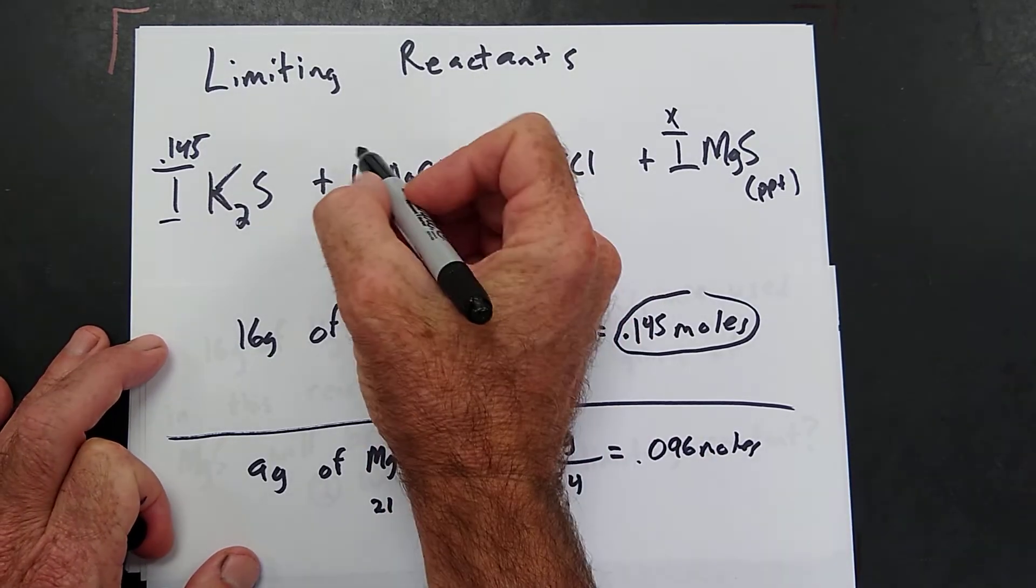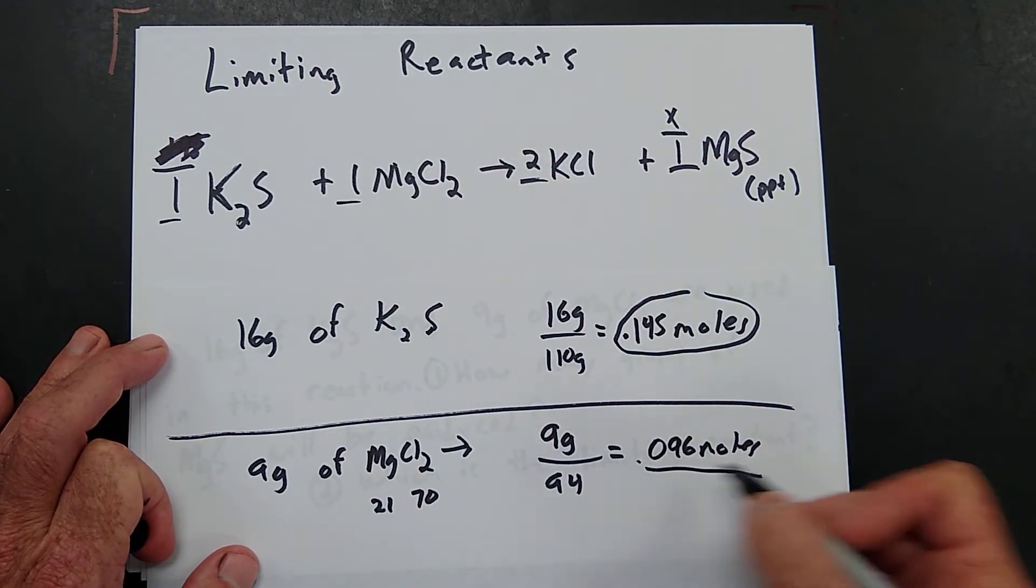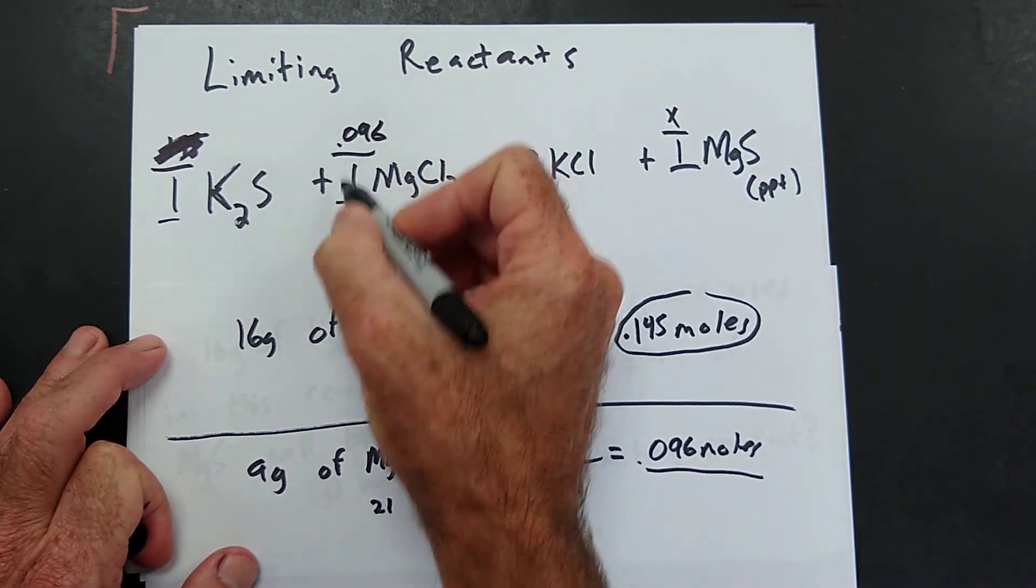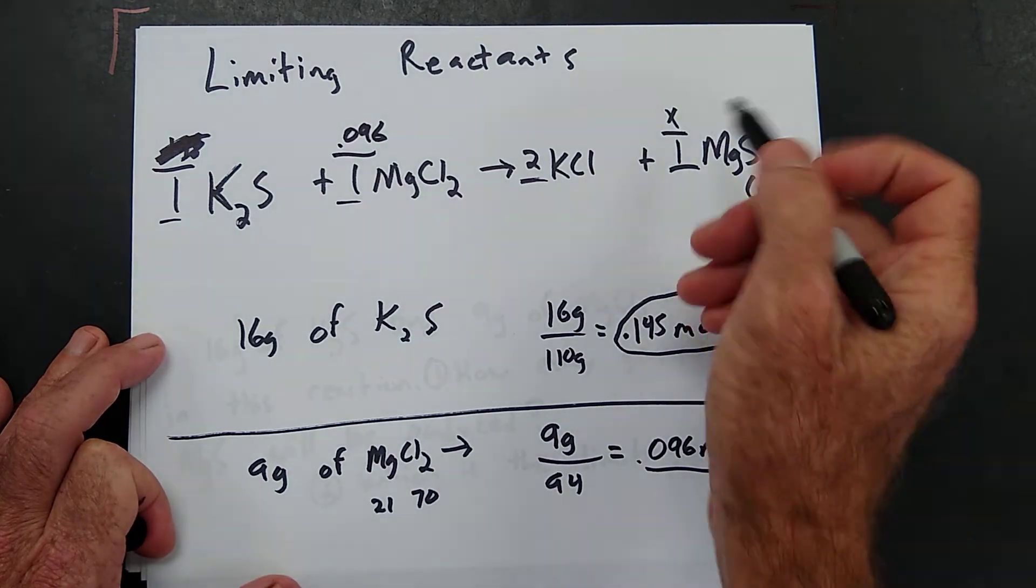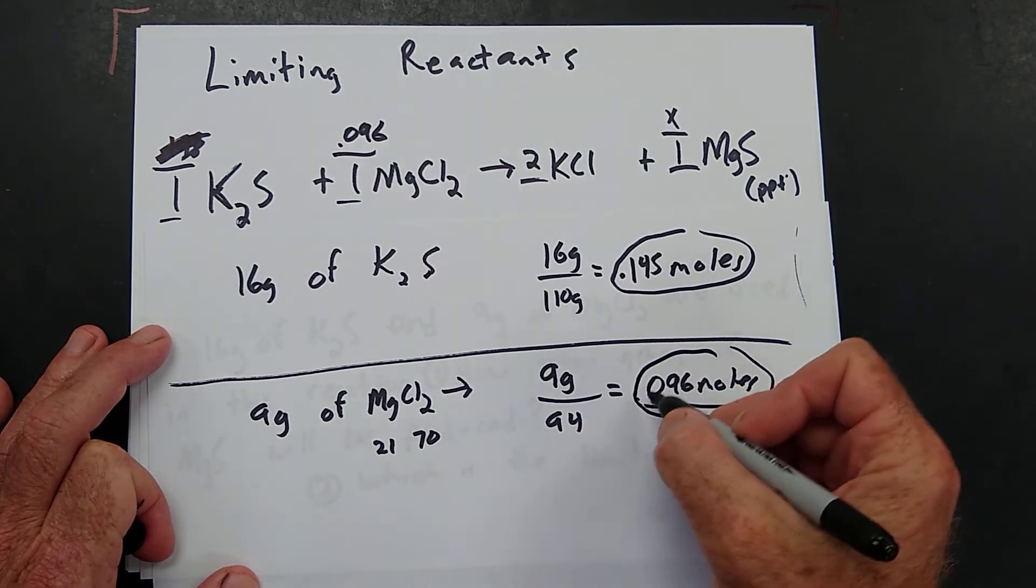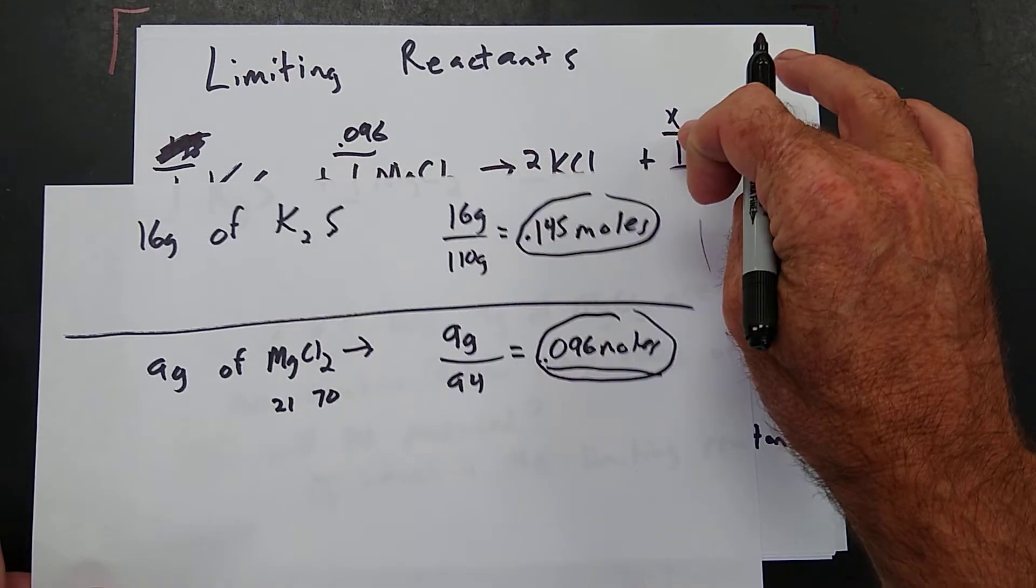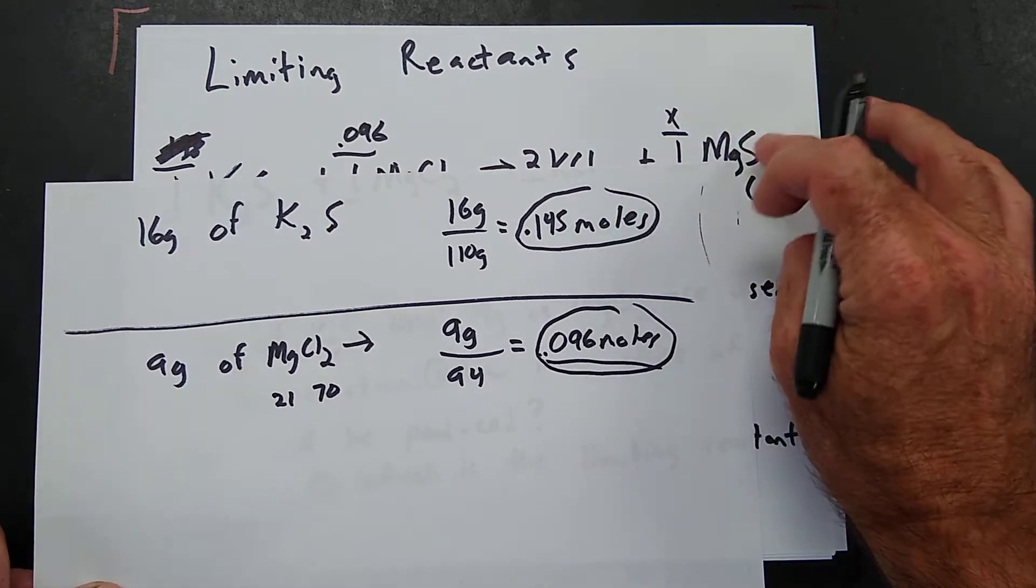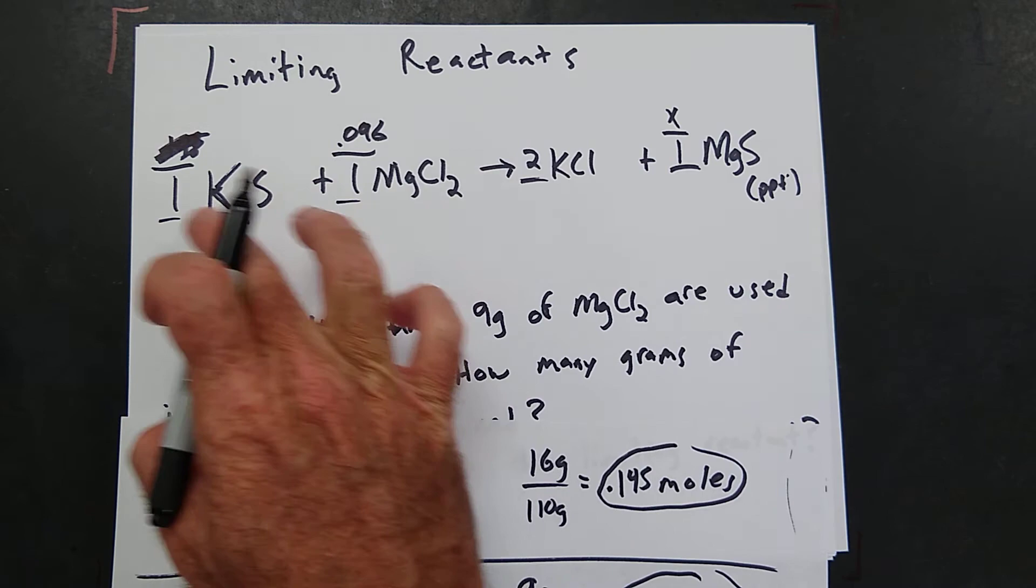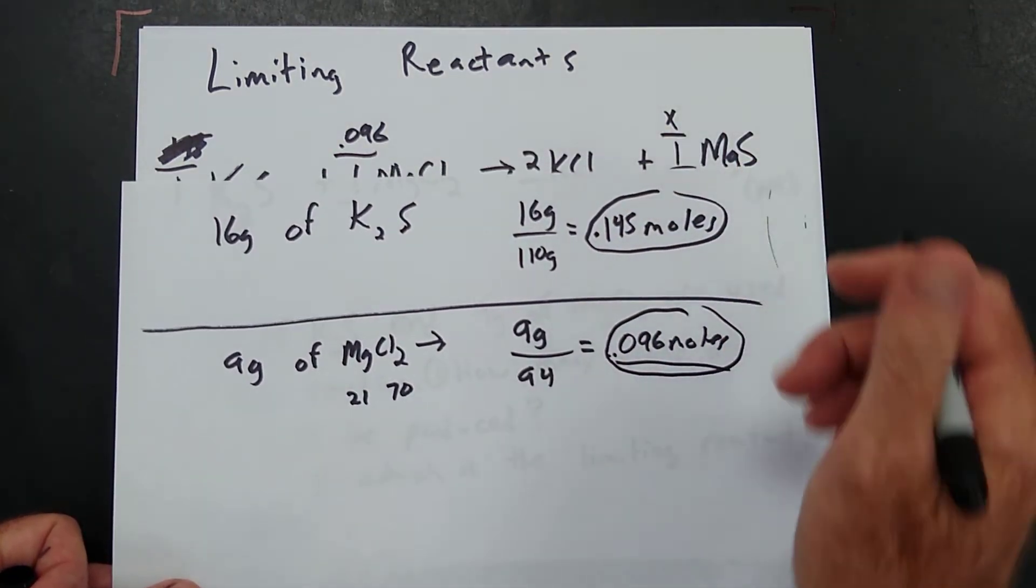So in this one, if it's 0.096 moles of MgCl₂, 0.096 is to 1 as 0.096 is to 1. So if we used the 9 grams of magnesium chloride, we would only produce 0.096 moles of magnesium sulfide. If we use the 16 grams of potassium sulfide, we would produce 0.145 moles of magnesium sulfide.